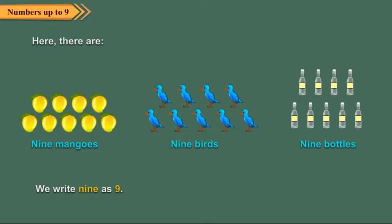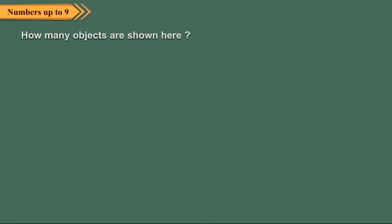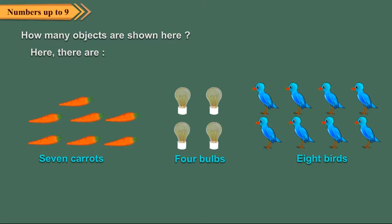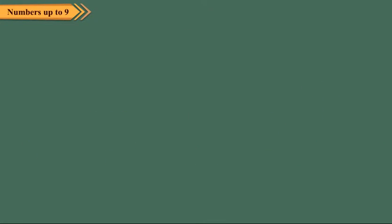Now, let us see how many objects are shown here. Here, there are seven carrots, four bulbs, eight birds. Let us now read the numbers learnt so far in sequence.